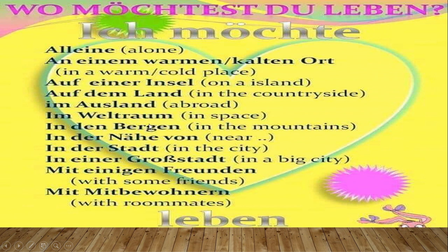You have to make sentences using all these nouns. For example: Ich möchte alleine wohnen — I would like to live alone. Ich möchte in einem warmen oder kalten Ort wohnen — I would like to live in a warm or cold place. Ich möchte auf einer Insel wohnen — I would like to live on an island. Ich möchte auf dem Land wohnen — I would like to live in the countryside. Ich möchte im Ausland wohnen — I would like to live abroad. Ich möchte im Weltraum wohnen — I would like to live in space.